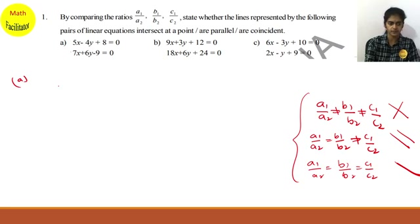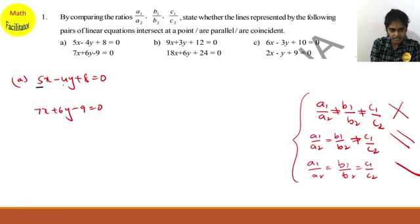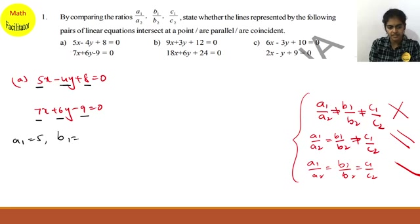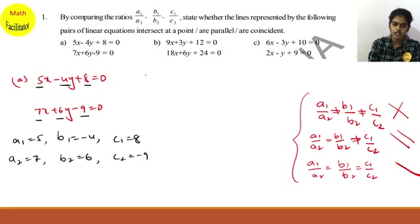First question, part (a): the first equation is 5x minus 4y plus 8 equals 0, and the second equation is 7x plus 6y minus 9 equals 0. From these equations, the coefficients are: a1 is 5, b1 is minus 4, c1 is 8, a2 is 7, b2 is 6, c2 is minus 9.